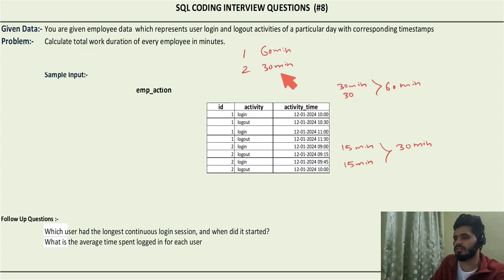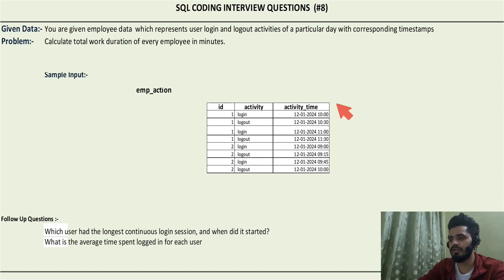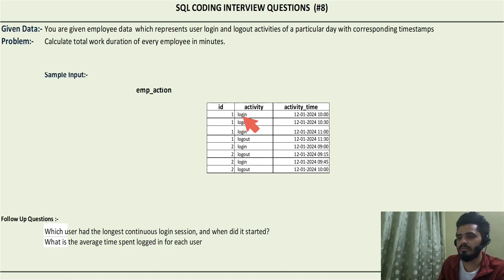Now let's see the approach to solve this question. There can be multiple ways to solve this problem, so if you think you can solve it, you can pause the video and try it yourself. Here is the approach I'll show: whenever a login is happening, we try to find the logout time for that particular login. We will create a new column called 'logout_time,' so for every login event we will identify its corresponding logout time.